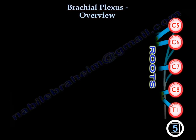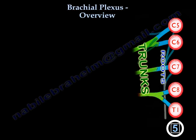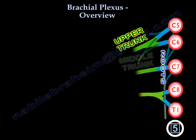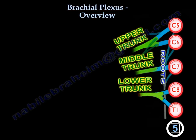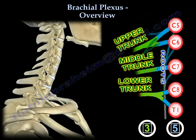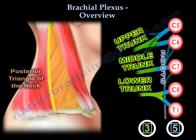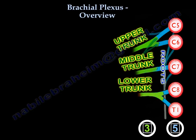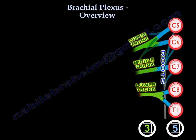After the roots, you find the trunks: the upper trunk, the middle trunk, and the lower trunk — three trunks in total. They pass through the posterior triangle of the neck. So five roots give you three trunks.